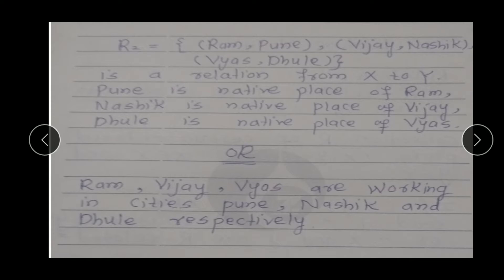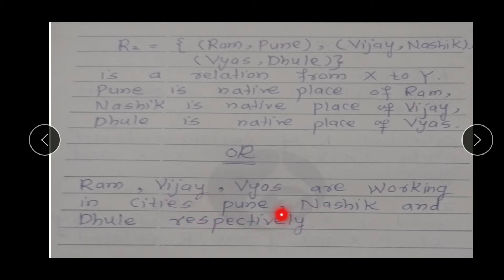Similarly, और हम यहाँ पर और एक interpretation ले सकते हैं: Ram, Vijay, and Vyaas are working in cities Pune, Nashik, and Dhule respectively. यहाँ पर Ram कहाँ पर work कर रहा है? Ram Pune में work कर रहा है. Similarly, Vijay का जो working place है वो Nashik है, और Vyaas का जो working place है वो Dhule है. तो relation जो simply होता है वो any subset of X cross Y है.